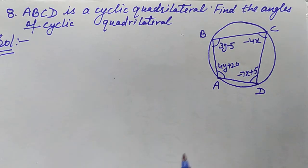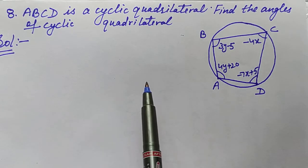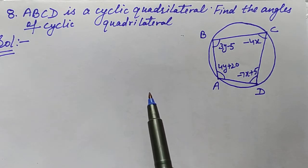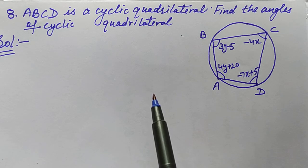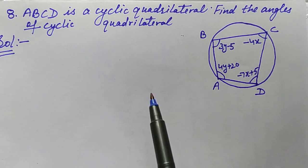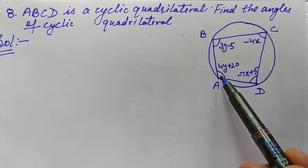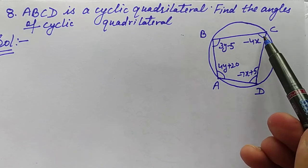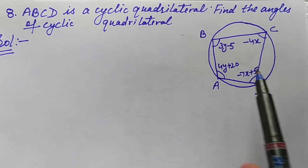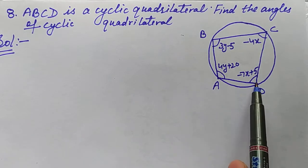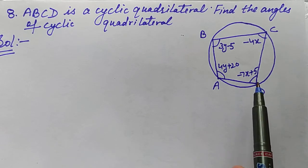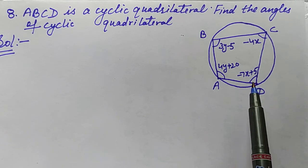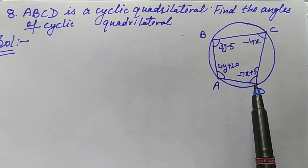All the angles are given and we need to find their measures. We know the property of a cyclic quadrilateral: the sum of the opposite angles is 180°. So angle A plus angle C equals 180°, and angle B plus angle D equals 180°.